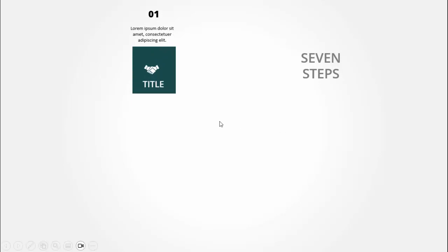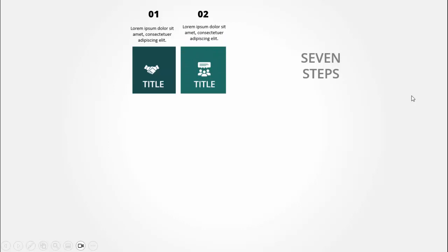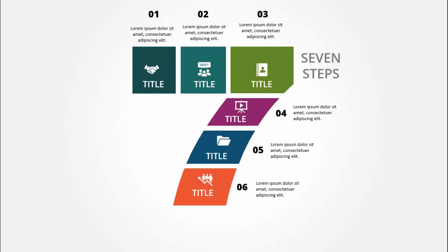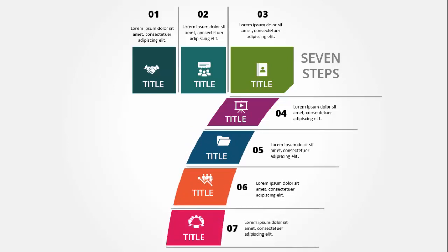In today's tutorial I'm going to show you how to create seven steps using the number seven. When I click it will show the first one - the title and option number one with detailed text. Clicking again shows the second one with a different color combination, then third, fourth, fifth, sixth, and seventh. Using the number seven, I've converted it into small blocks.